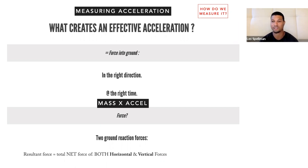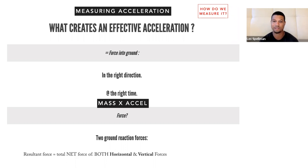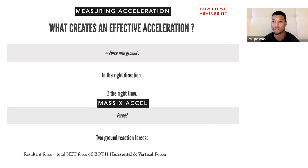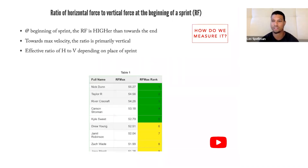Everyone's heard of forces and everyone's heard about putting force in the ground. Putting force in the ground in the right direction at the right time is what creates the best acceleration. If you look at forces, we're really looking at mass times acceleration — the mass of the athlete times the acceleration rate. Within this, we have two ground reaction forces. We have a resultant force, which is the total net force of both horizontal and vertical forces. Vertical is straight down; horizontal is what pushes us forward and creates projection. The ratio between these forces we call ratio of force.